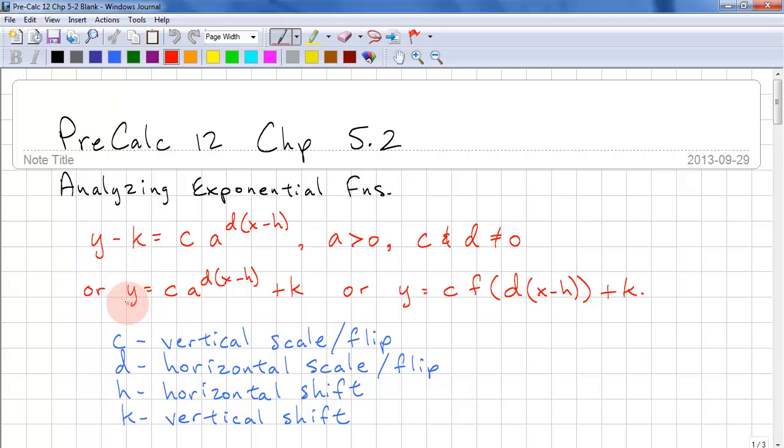The other form we can use is y equals c times a to the power of d times x minus h in brackets, then plus k. Using function notation, we have y equals c times f of d times x minus h in brackets, then add k.